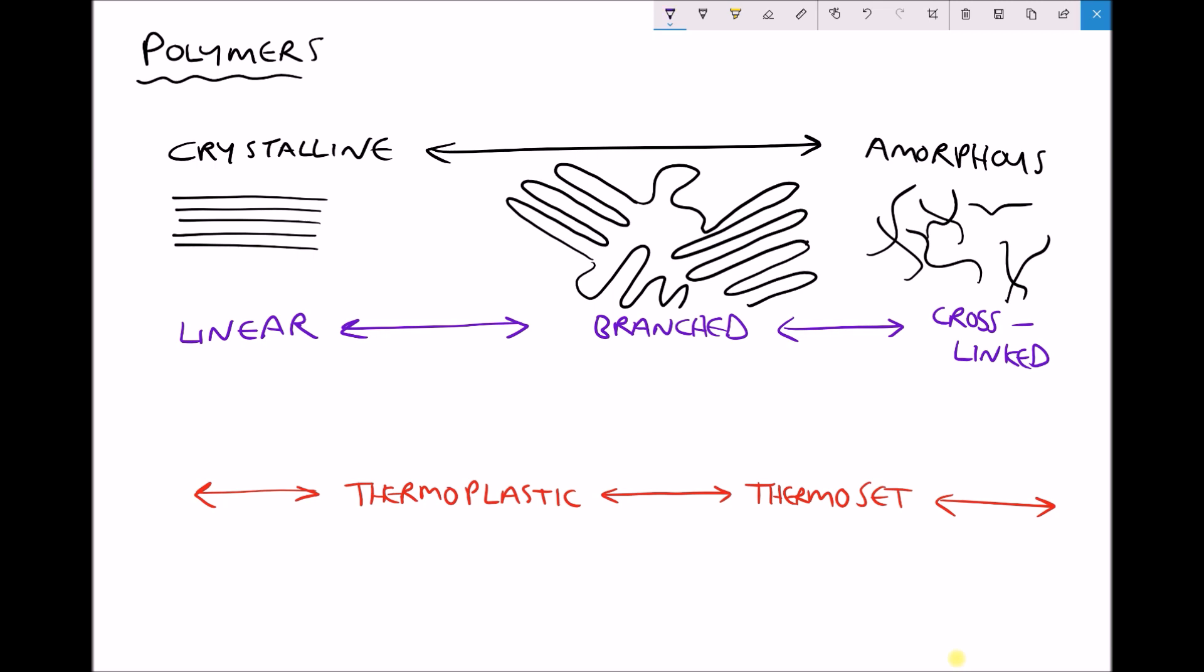Our next classifications are linear, branched and cross-linked polymers. And linear polymers are what we saw in the case of polyethylene where we have neat linear molecules. We saw an instance of a branched polymer in polypropylene where we had branches of CH3 coming off of those polymer chains. And those branches can vary in quantity and also vary in length.